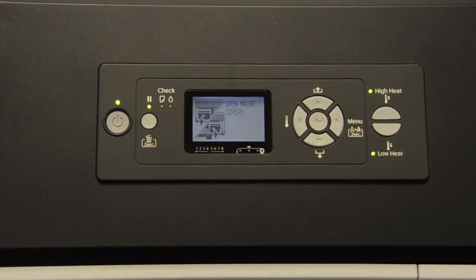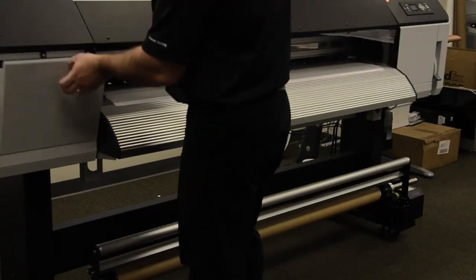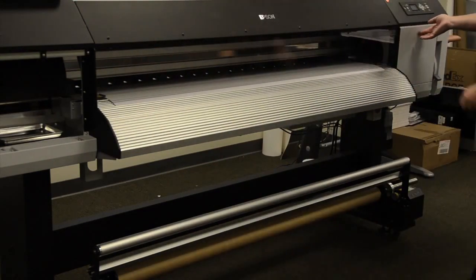The first step in this process, as instructed on the LCD screen, is to remove the maintenance covers. There is both a left and right cover. However, you simply need to depress the cover, open it, and then remove the cover itself.